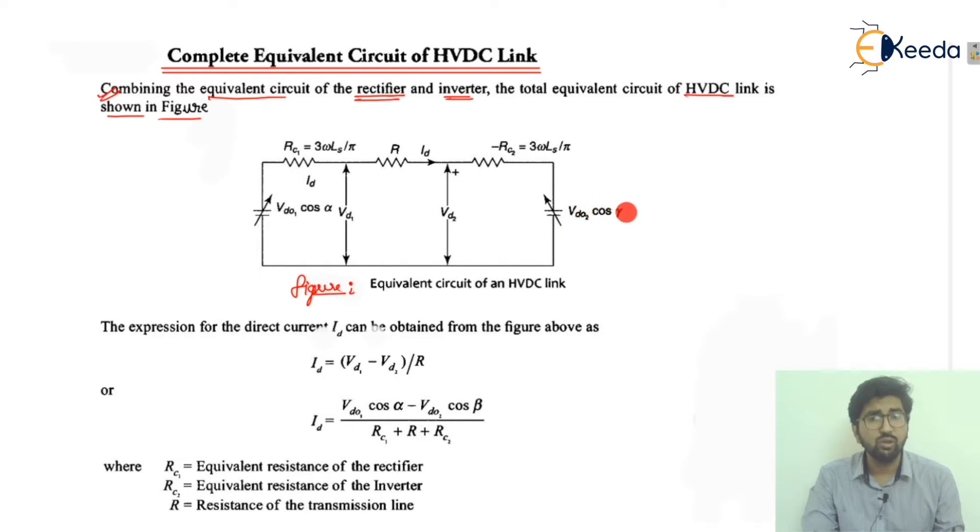Similar pattern on the inverter side we will have VD2 cos gamma. In the rectifier side we are generally taking the alpha, that is the firing angle, and here the extinction angle and the angle of advancement. Now look at RC1 and minus RC2 written here. When we have the rectifier, this is going to be 3ωLs/π, and when we have the inverter, we have minus RC2, that is 3ωLs/π.